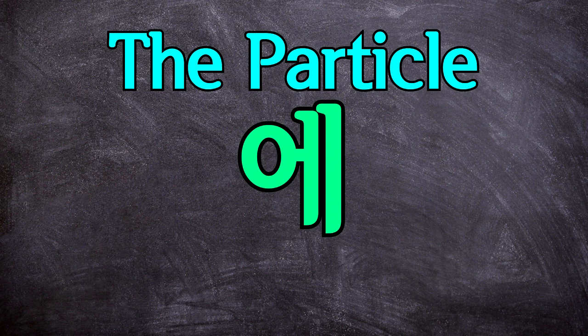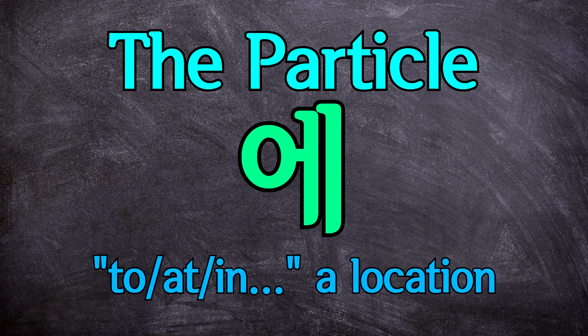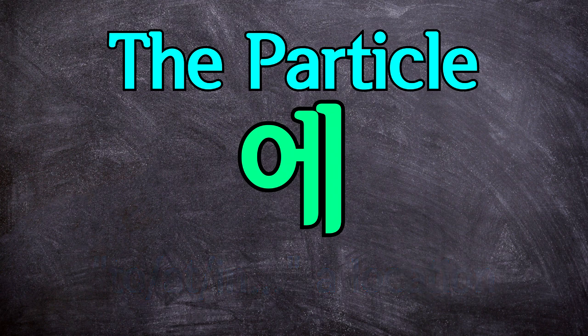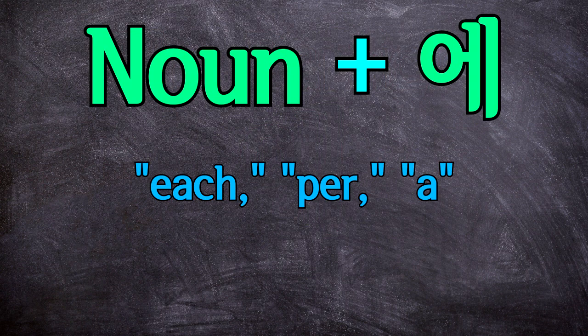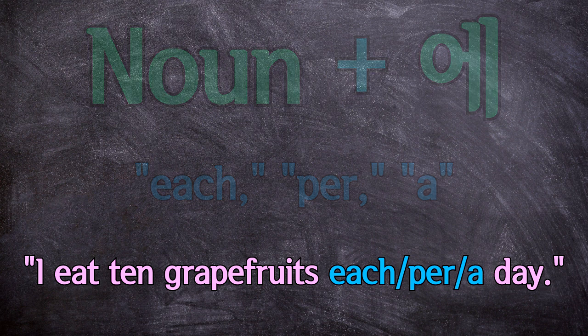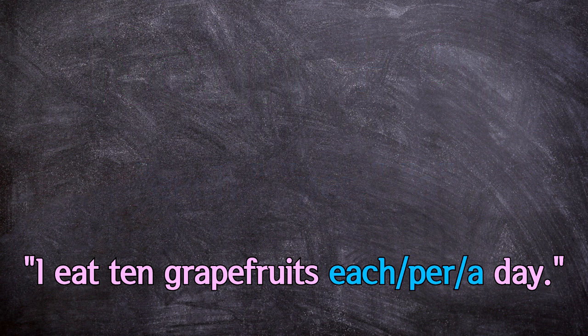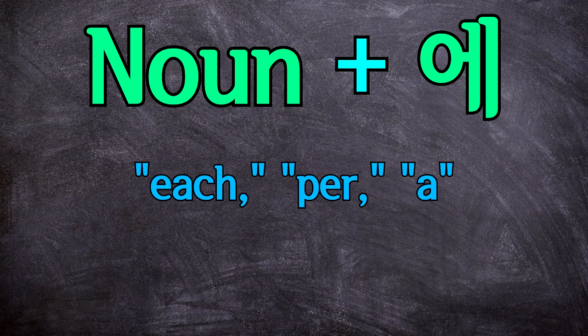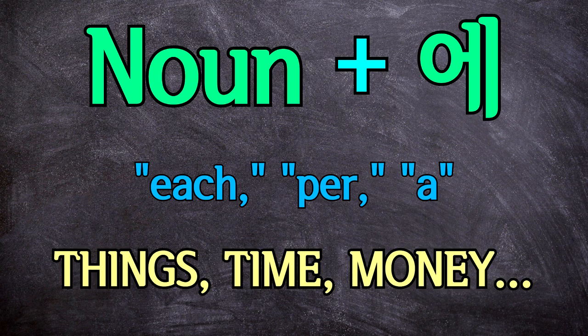The first particle we're going to be learning about is the particle 에. Isn't 에 used to say 'to' or 'at' a location? Yes, but it has a few other uses too, one of which we'll cover in this lesson. So try to keep this form separate in your notes. The particle 에 can also be used after a noun to mean 'each,' 'per,' or 'a.' For example, to say 'I eat 10 grapefruits each day' or '10 grapefruits per day' or '10 grapefruits a day.' That's actually an unhealthy amount of grapefruits, but let's focus on the lesson. However you translate this in English is up to you, and it can be used after any sort of countable noun — not only things like grapefruit, but also with time or money.